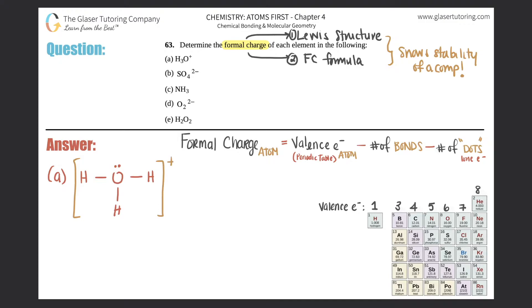Now let's run through the formal charge. The formal charge formula applies to each atom individually, so you have to do it for every atom. In this case we do it for the three hydrogens and the one oxygen. However, if atoms of the same element are identical in bonding and lone pairs, you only need to calculate one and distribute that number. These three hydrogens all look the same — no lone electrons, each attached by a single bond — so we'll find the formal charge for oxygen first, then hydrogen.